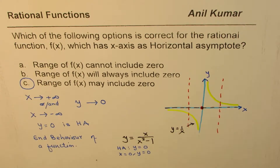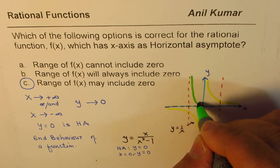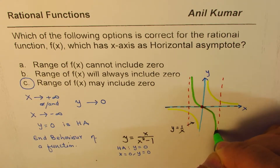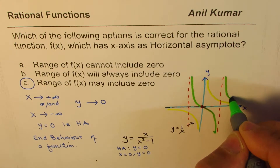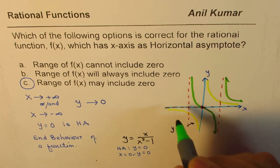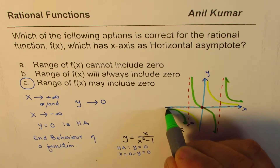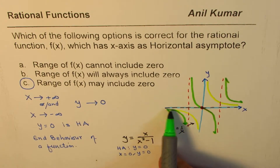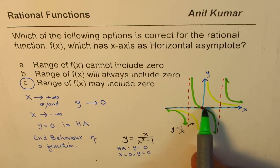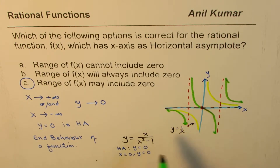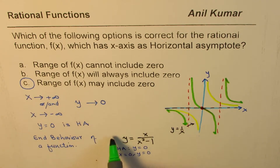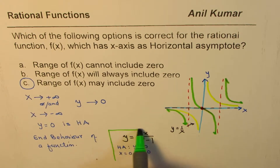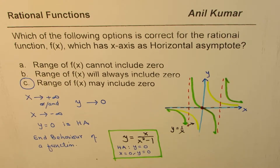If you sketch this function, you'll see that the horizontal asymptote is y equals zero, however the function crosses it, and the range is all real numbers. So that could be a counter-example to the statement that the range cannot include zero.